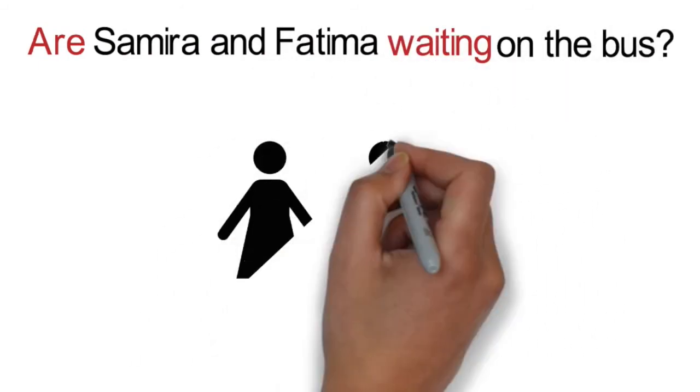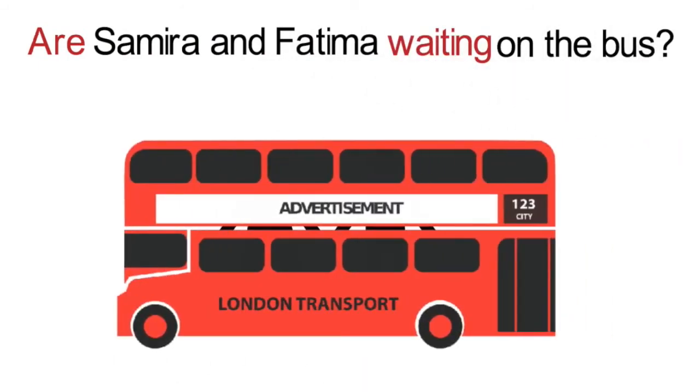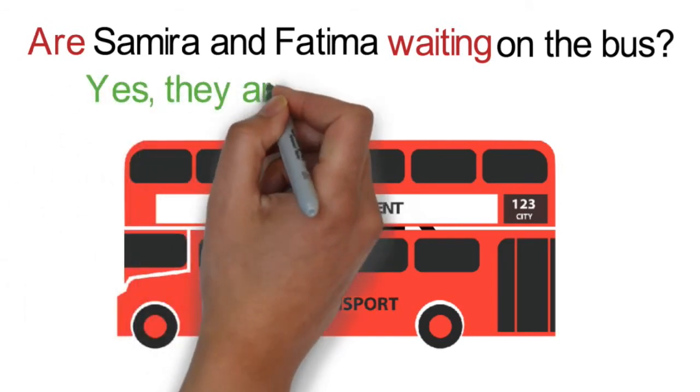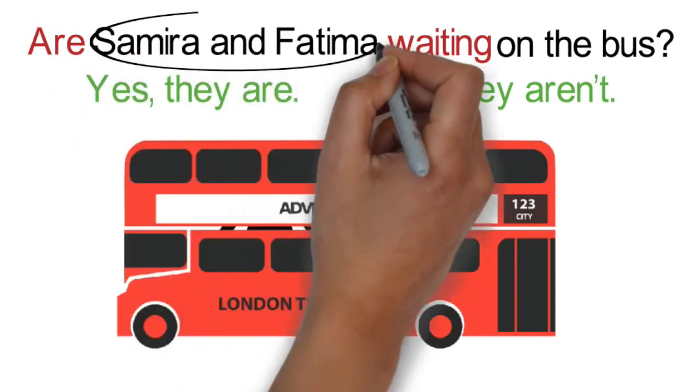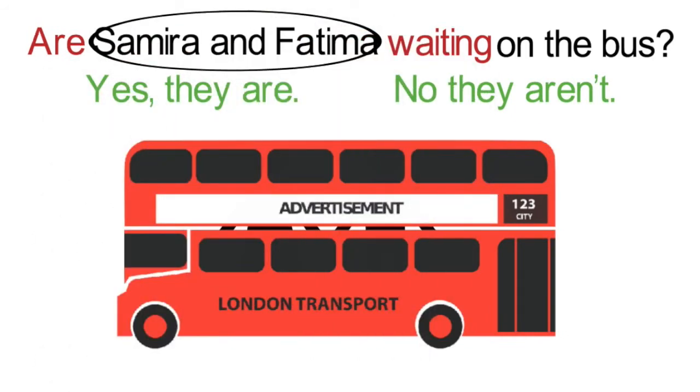Another example using plural nouns is, are Samira and Fatima waiting on the bus? The answer would be, yes they are, or no they aren't. Since Samira and Fatima are plural, the correct form of to be is are.